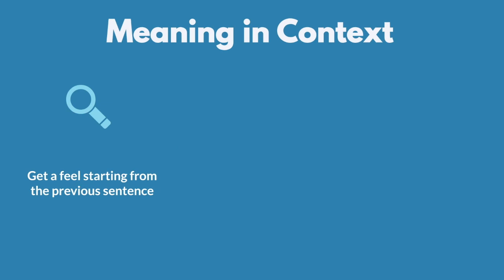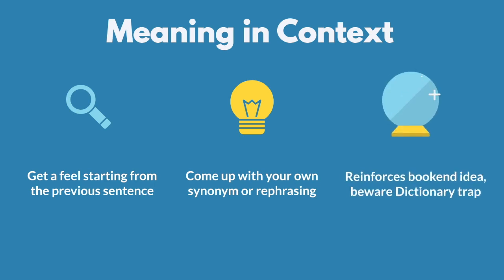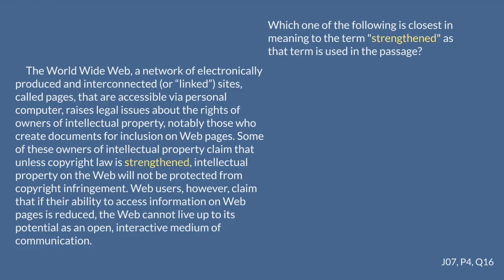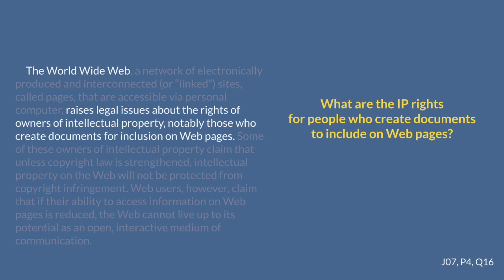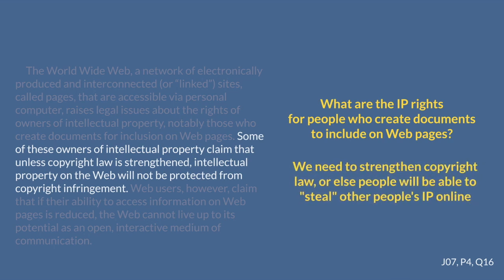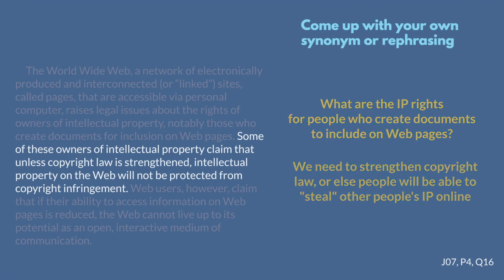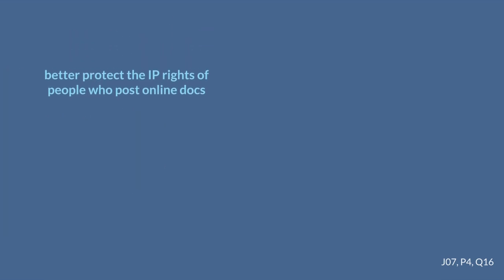For the substitution type of meaning-in-context question, we're going to look starting from the previous sentence to get a general feel for what we were talking about and try to come up with our own synonym for the word we're replacing. The correct answer usually leans on language before or after that sentence, and the trap answers just deal with your dictionary definition of the word. We need to figure out what the context was, so we'll come up with our own word that would work for 'strengthened.'